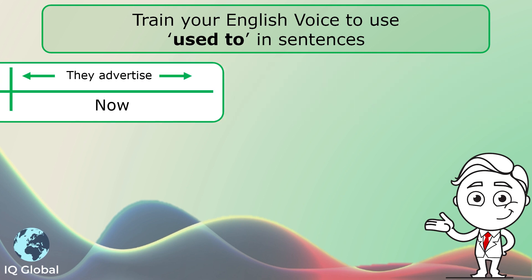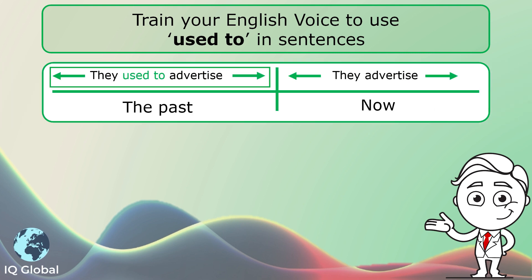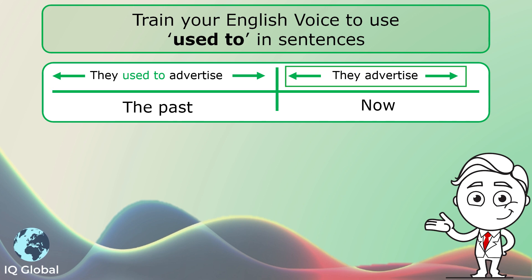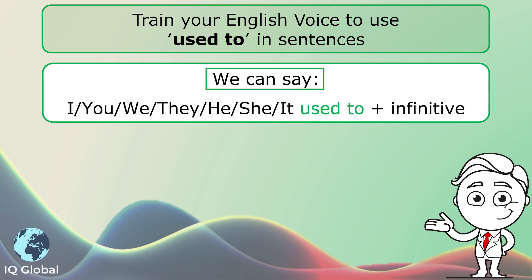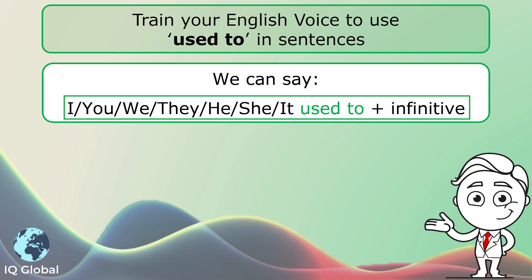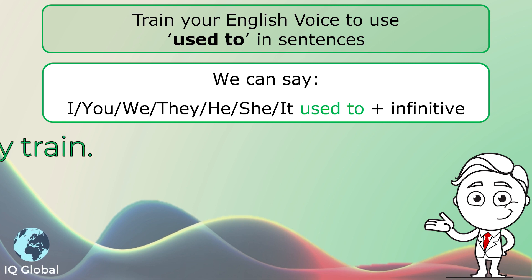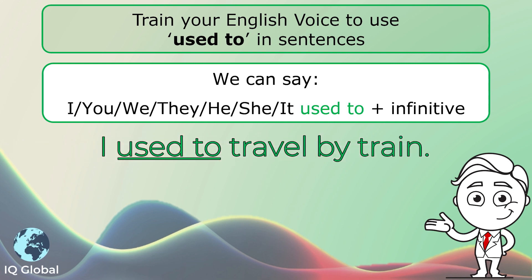Let's have a look at this. 'They used to advertise' — that's the past. When we say 'they advertise', it's the present. We can say I, you, we, they, he, she or it — used to plus infinitive. For example: I used to travel by train.